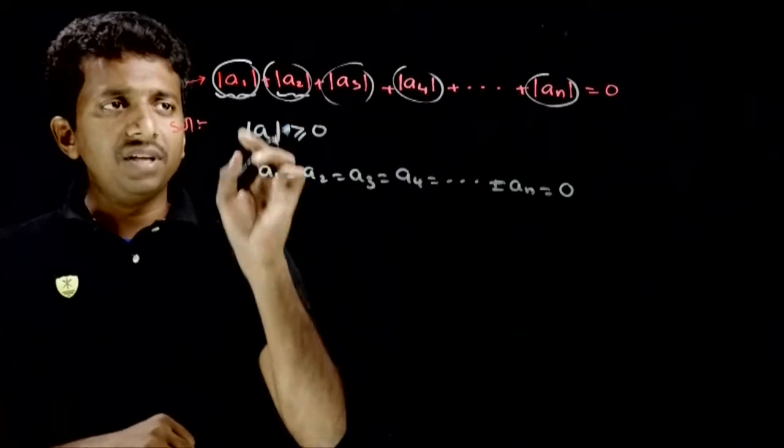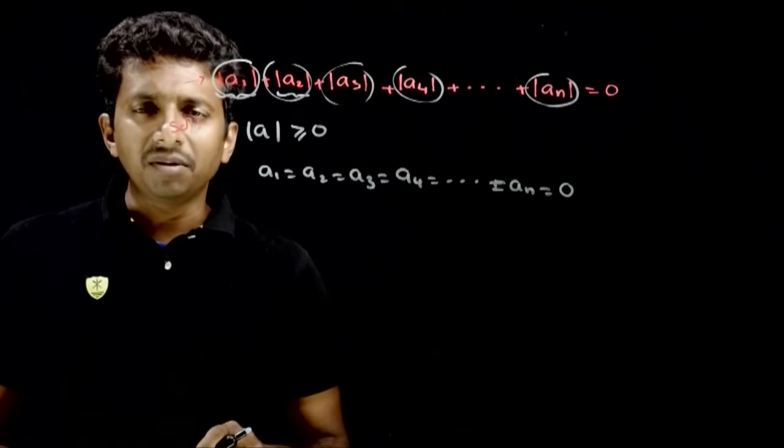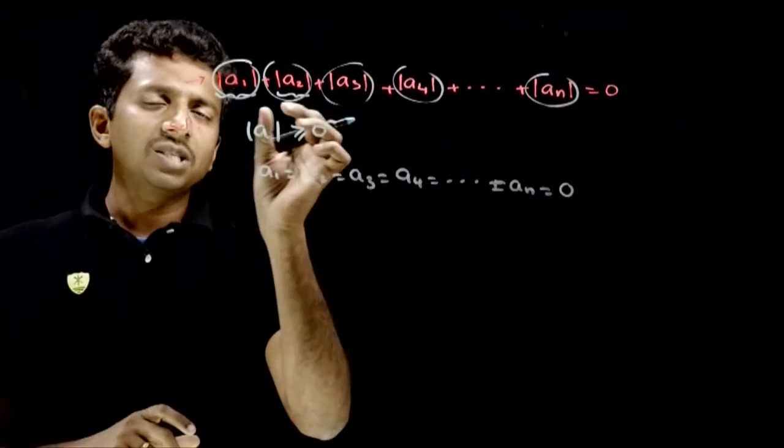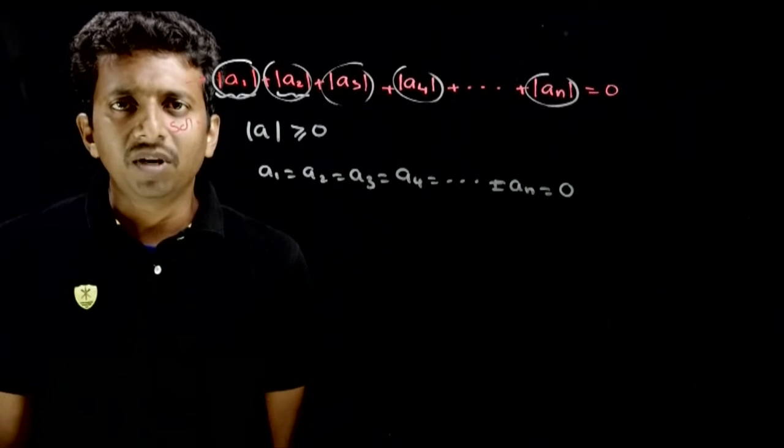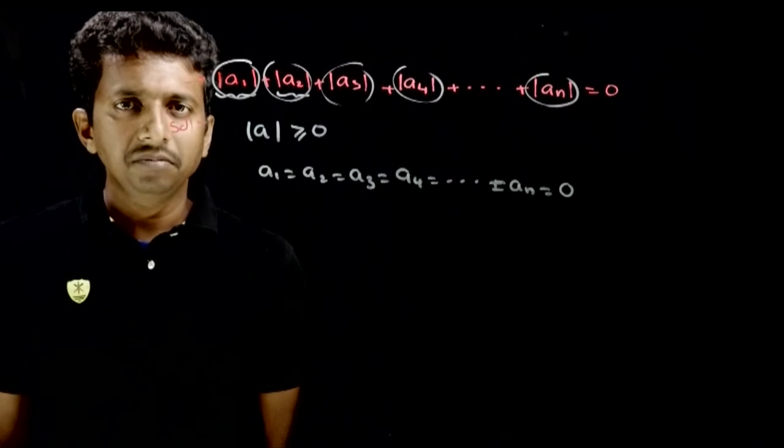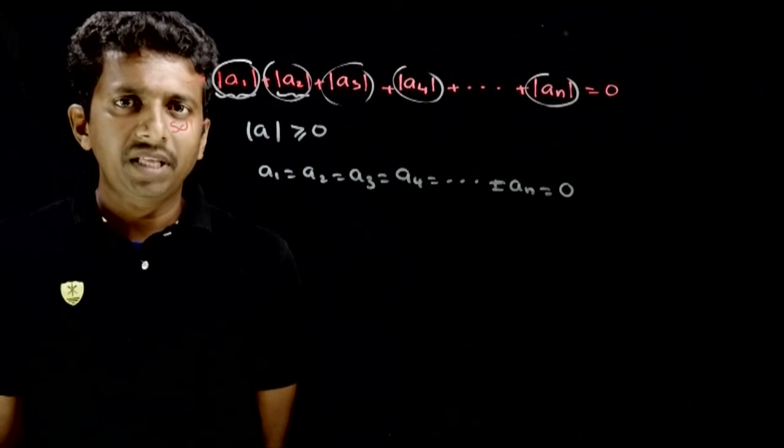So only if each and every one of these numbers is equal to 0, then only the mod of this plus this plus this and so on will be equal to 0. Okay? Thank you.